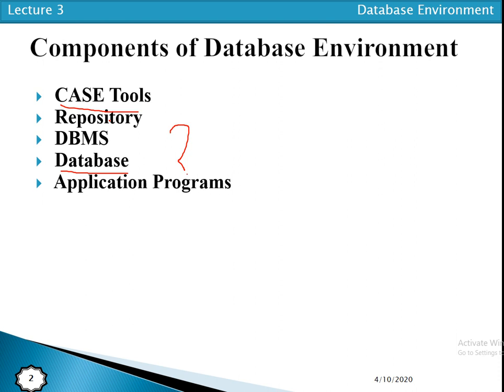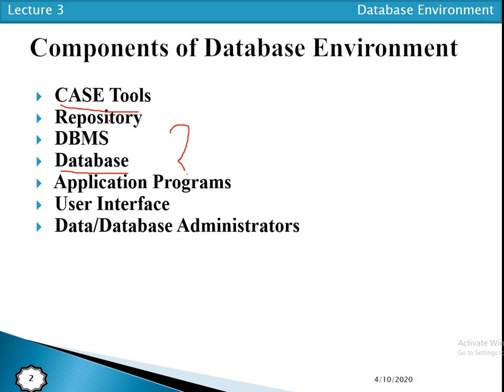The next component is application programs. These are the computer programs used to create and maintain the database, and they provide information to the users of the database. After that, we have the user interface — these are the languages and menus through which users interact with the different system components.